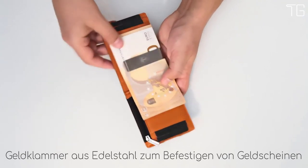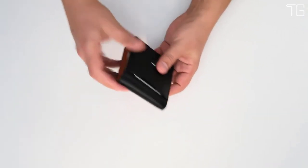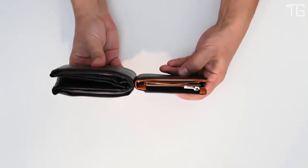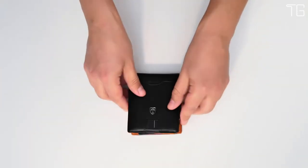Functional and slim, Travando's wallet offers seven card pockets. The slim wallet is ideal for carrying business cards, credit and debit cards, bills, etc.